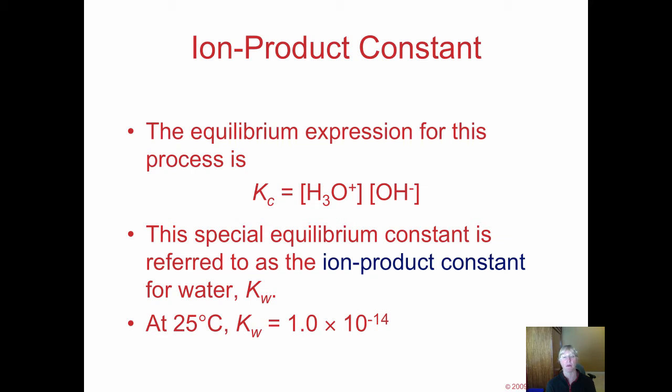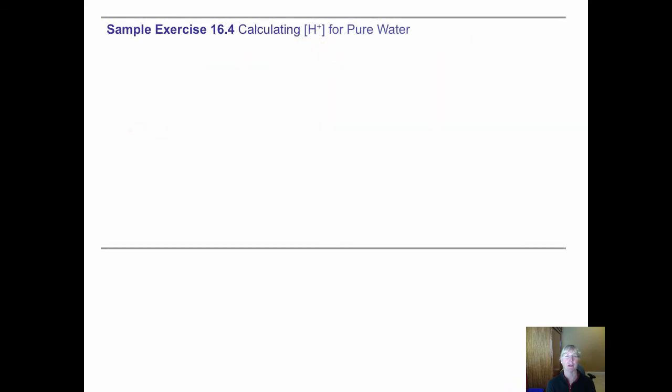It's been experimentally proved that this ionization constant for water, or ion product constant, is 1.0 times 10 to the negative 14th. A very tiny number, but hopefully that number 14 looks a little familiar to you.